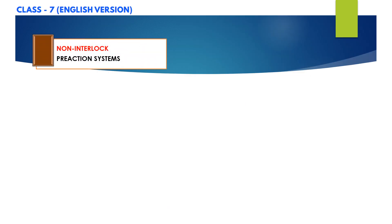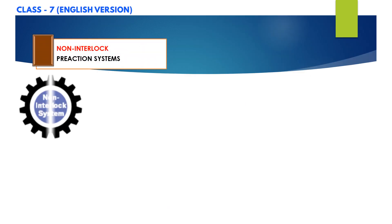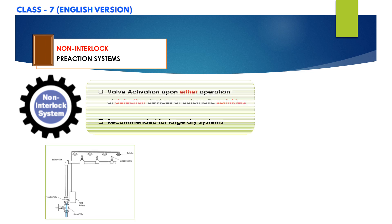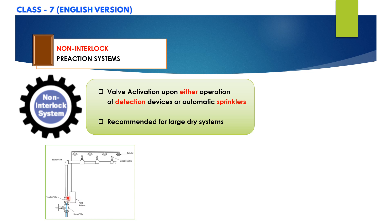Now let's discuss non-interlock pre-action systems. Non-interlock pre-action systems are designed such that the pre-action valve activates and admits water to the sprinkler piping upon either operation of detection devices or automatic sprinklers.